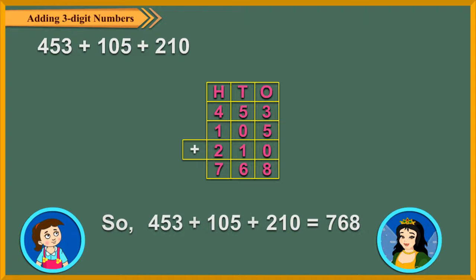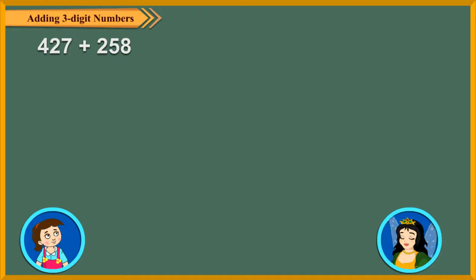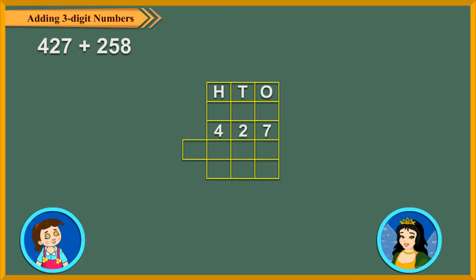Pay attention. I am going to discuss addition of 3-digit numbers with regrouping. Let us first add 427 and 258. First, arrange the numbers in columns. Then add the ones digits. 7 ones plus 8 ones is equal to 15 ones, which is equal to 1 ten and 5 ones. We write 5 in the ones column and carry over 1 to the tens column.